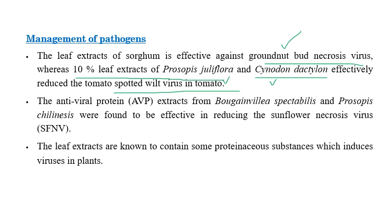These extracts of Prosopis juliflora and Cynodon dactylon are prepared using the same procedure mentioned earlier. Additionally, antiviral properties extracted from Bougainvillea spectabilis and Prosopis chilensis were found to be effective in reducing sunflower necrosis virus.